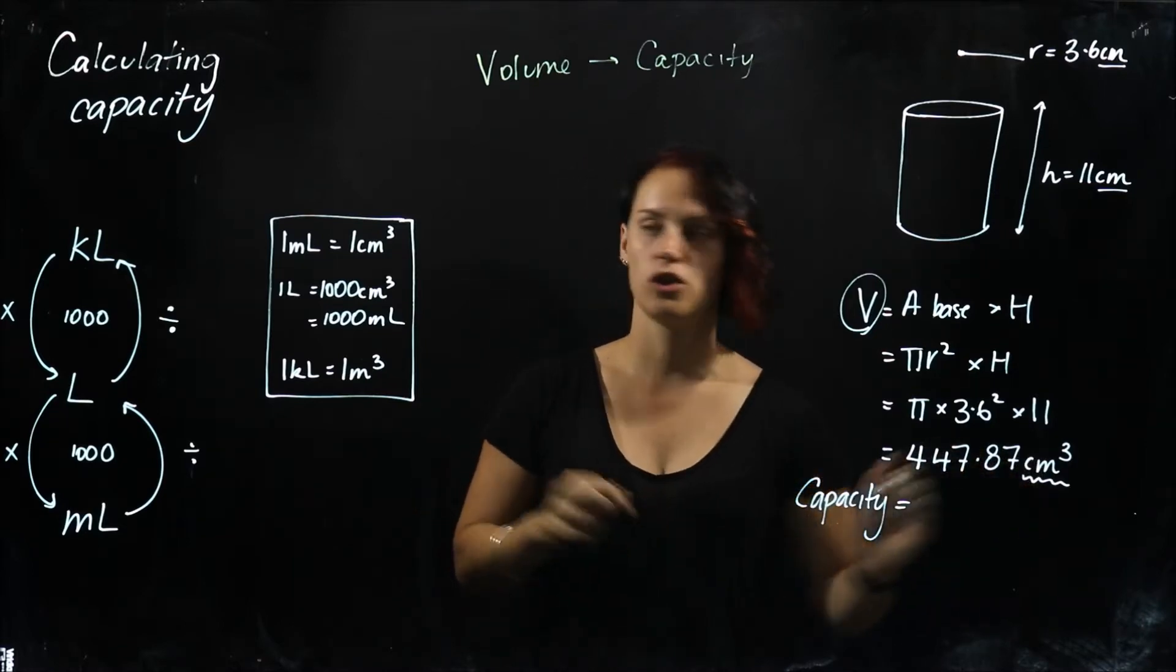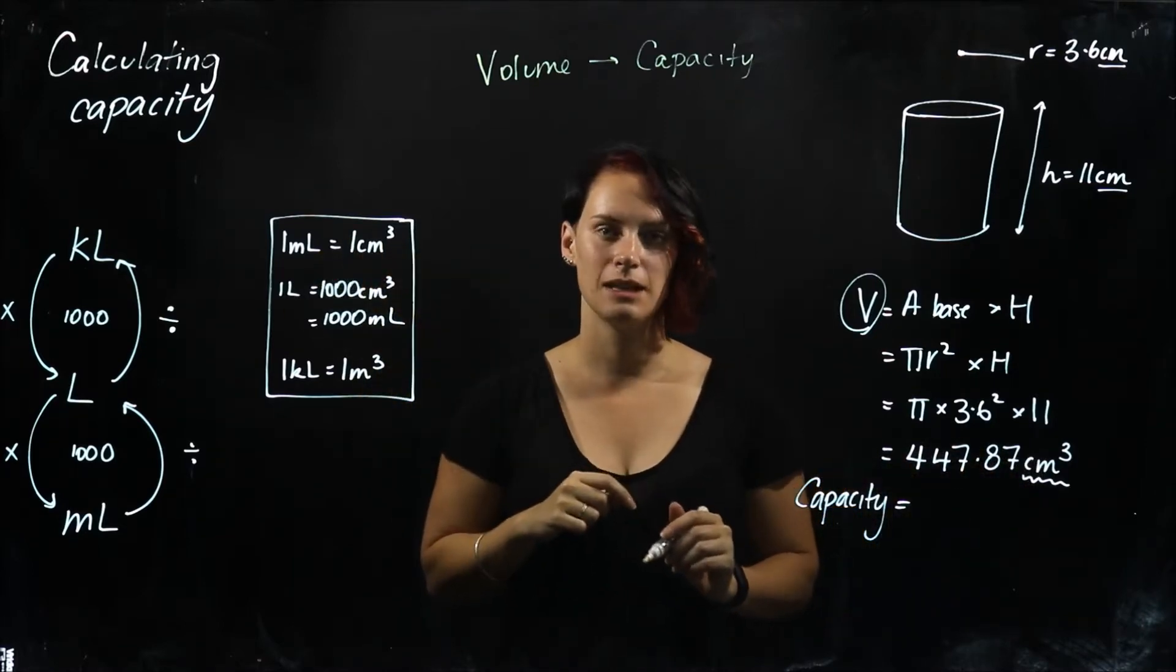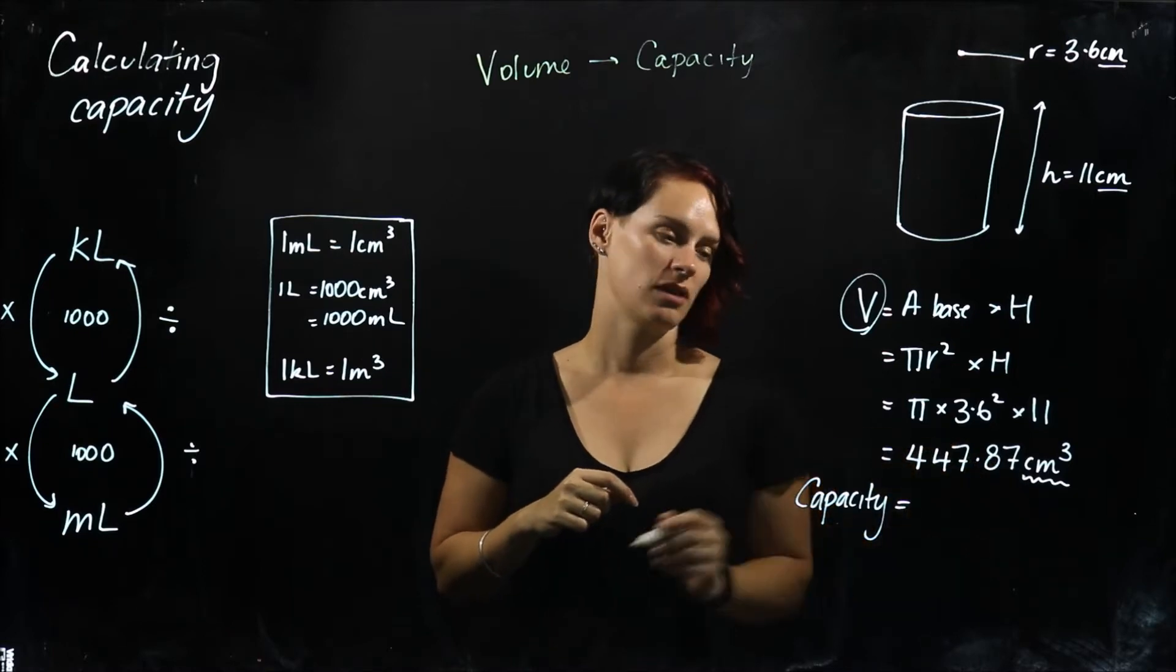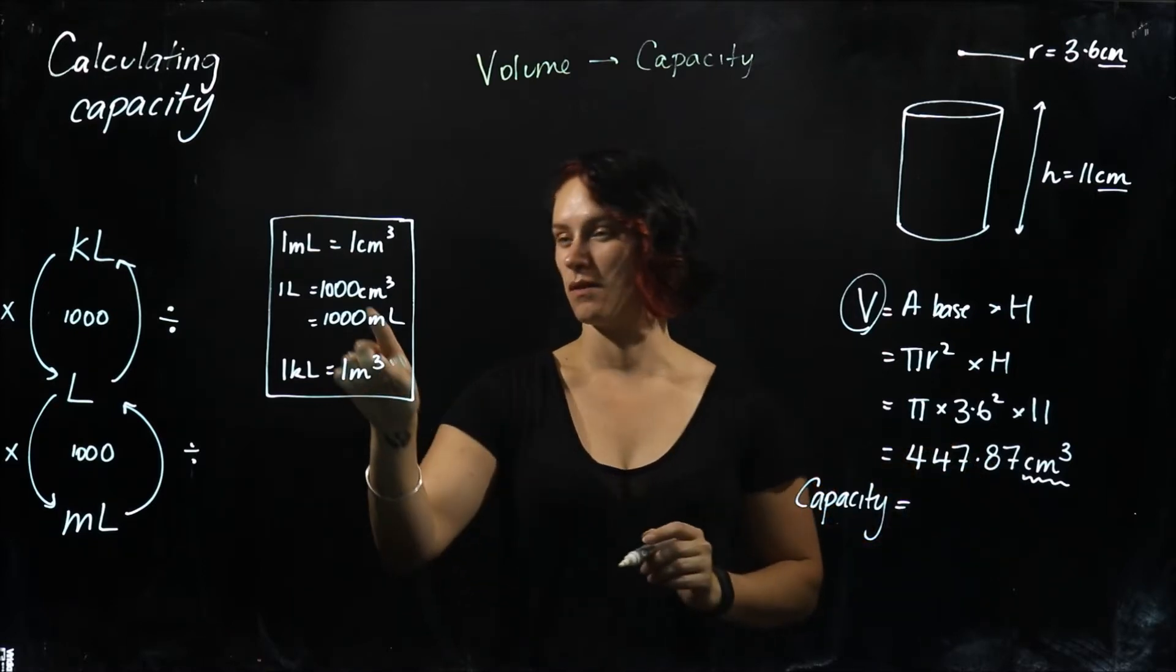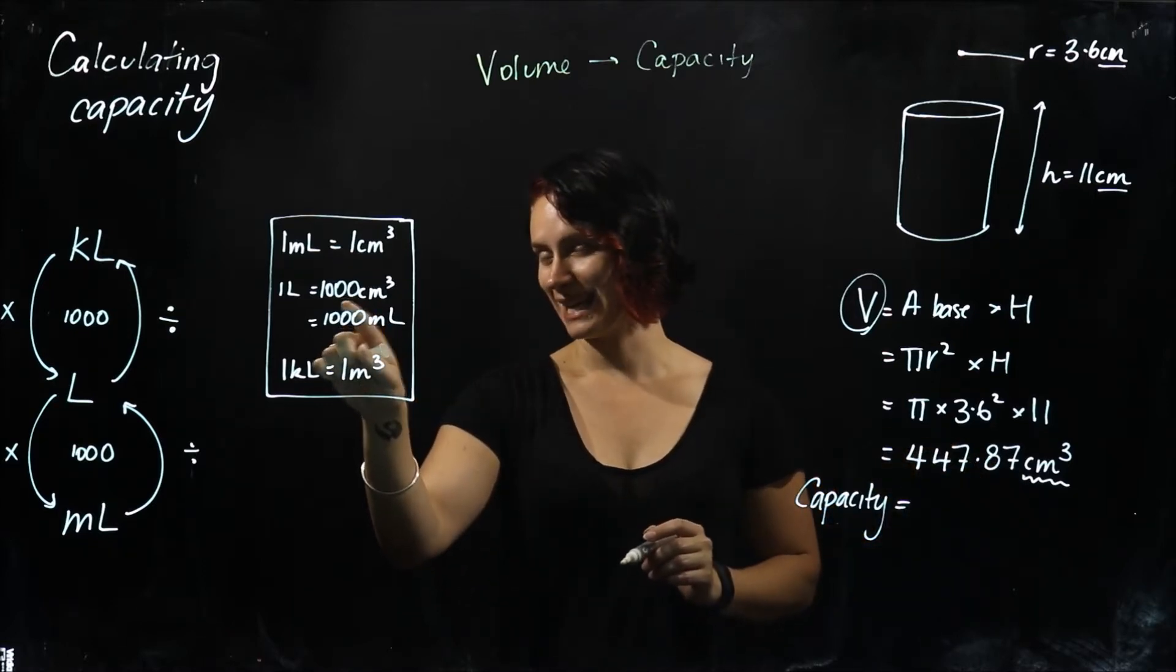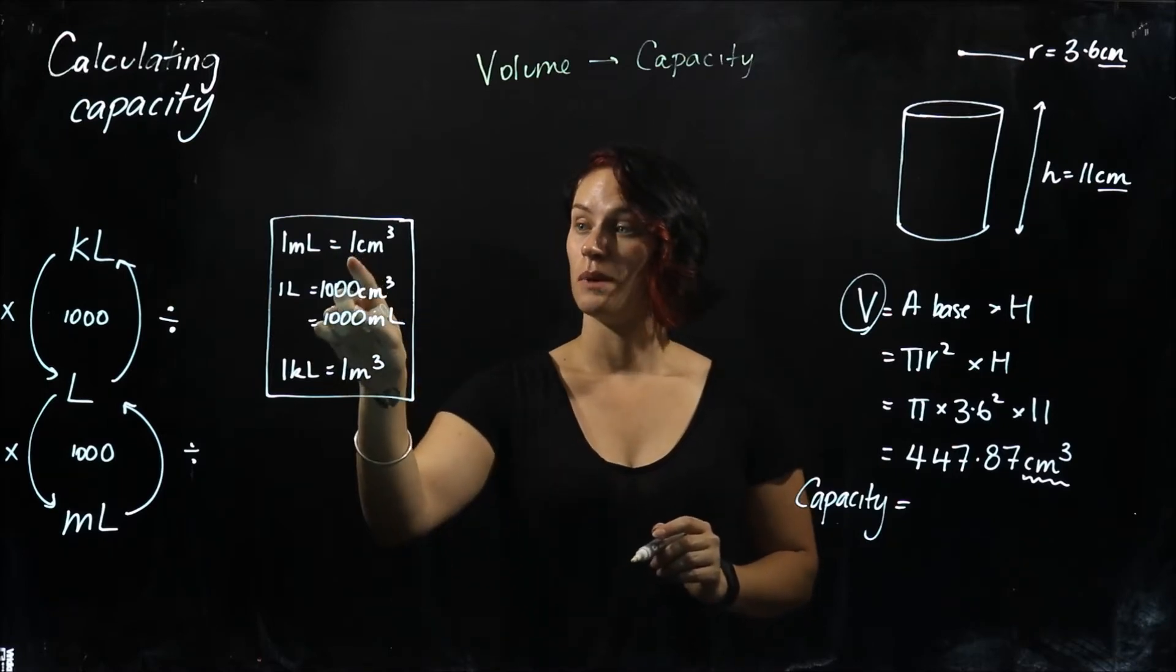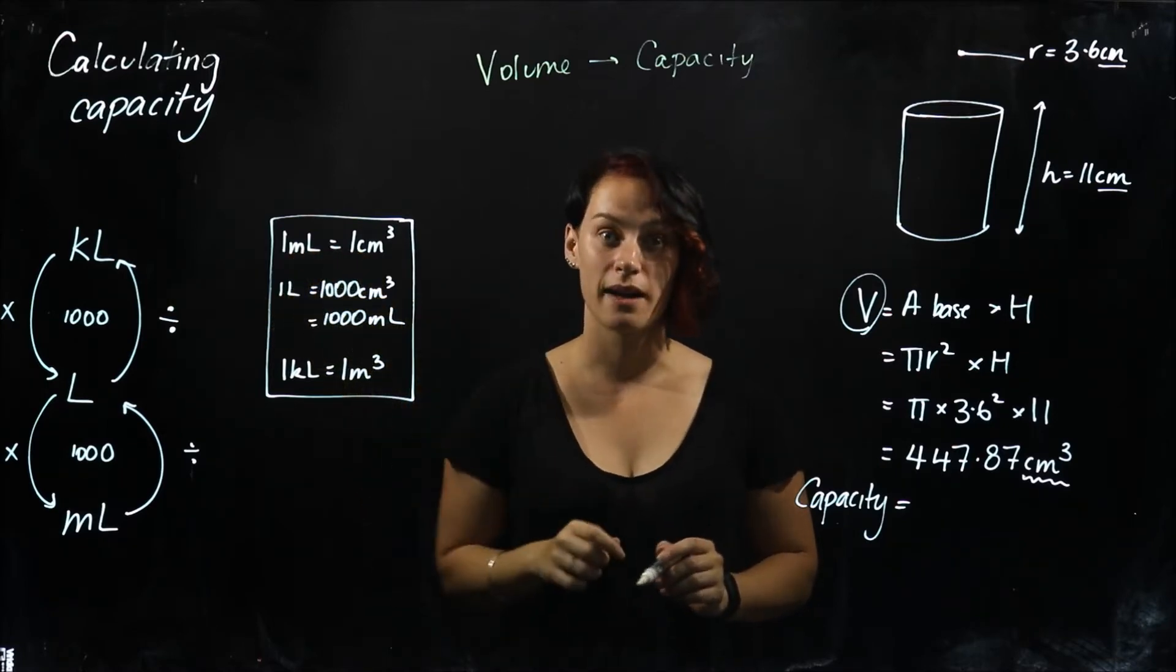We know that one cubic centimeter is one milliliter, and we have 447.87 of them. We don't have a whole liter yet because we don't have a thousand, so we'll be working as a one-to-one ratio.